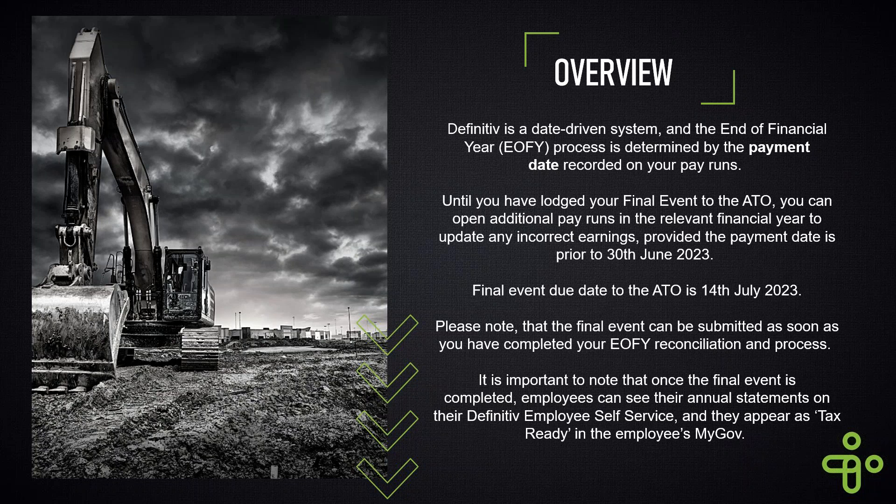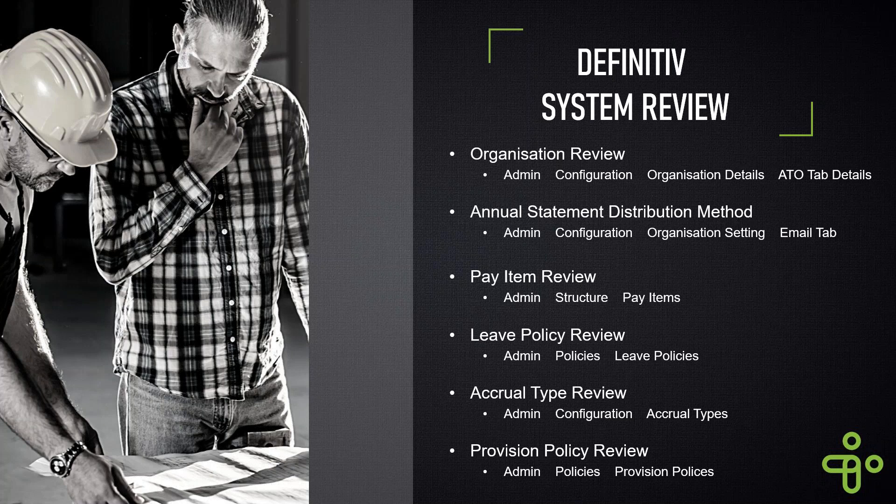That is when the annual statements for each employee come through to their Definitive self-service, and they'll also appear as tax ready in the employee's MyGov. So there's no more need to be issuing payment summaries anymore. Since we moved into STP, it's all an annual statement that is driven into MyGov as tax ready.